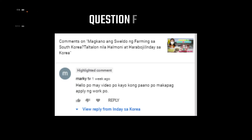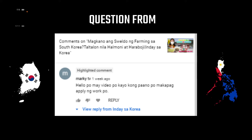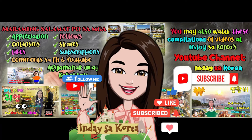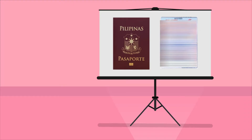Many are asking how to apply and what is the job application process in South Korea. One of them is from Marky TV. Let me share more detailed information about how to apply for a job in South Korea through the EPS program. The manufacturing job is one of the job order agreements between the Philippines and South Korea. Watch for the next video about how to apply and what are the processes to get a job in South Korea as a factory worker under the Employment Permit System EPS. Let's start with the simplest but most important things to have.